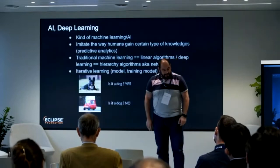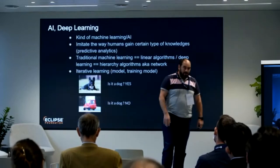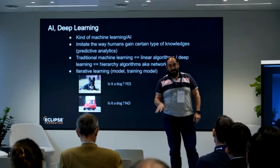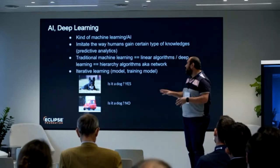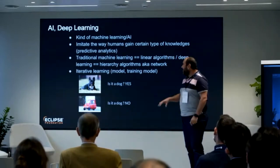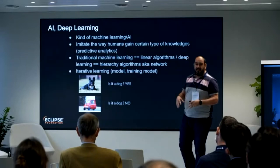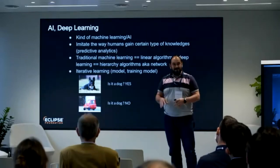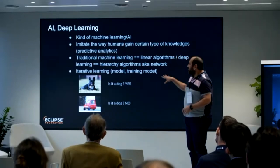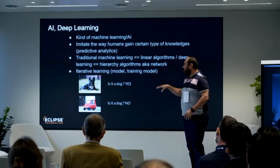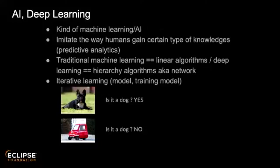When we talk about MindSpore, we have to talk about deep learning, which is a special kind of AI. The purpose is to imitate what humans do. Comparing traditional machine learning and deep learning: in traditional ML we have linear algorithms, whereas in deep learning we have a hierarchy of algorithms — what we call the network.